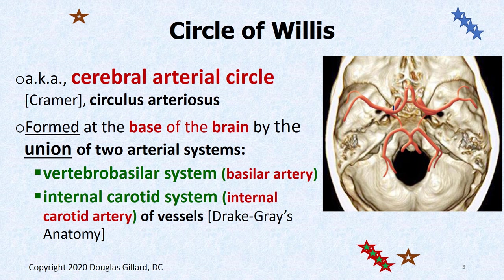This is called the circle of Willis, or the cerebral arterial circle, or circulus arteriosus. Watch out for those AKAs. It's said to be at the base of the brain and is formed by two systems: the vertebral basilar system, made of the basilar artery, and the internal carotid artery system, made by the internal carotid artery.